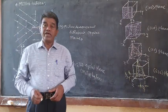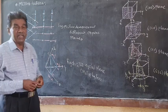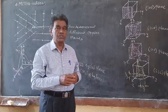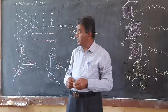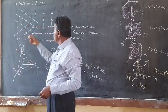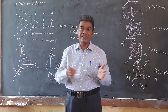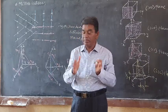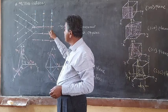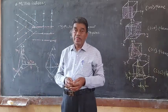Hello students, today we are going to learn about Miller Indices. Every solid is composed of atoms, ions, or molecules, and these are arranged in a systematic manner. The two-dimensional view shown here illustrates atoms arranged in a periodic manner. In a crystal, there exist many sets of parallel planes with different spacing — spacing means the perpendicular distance between parallel planes — and different orientations.